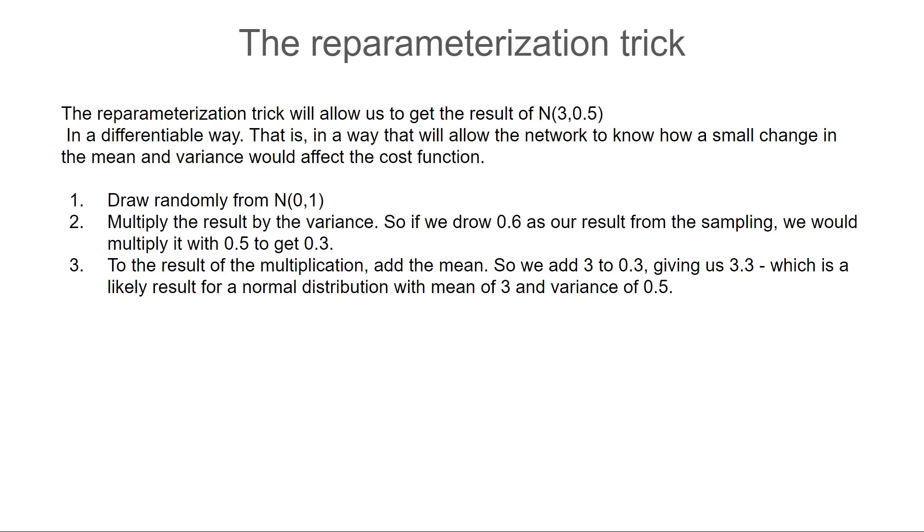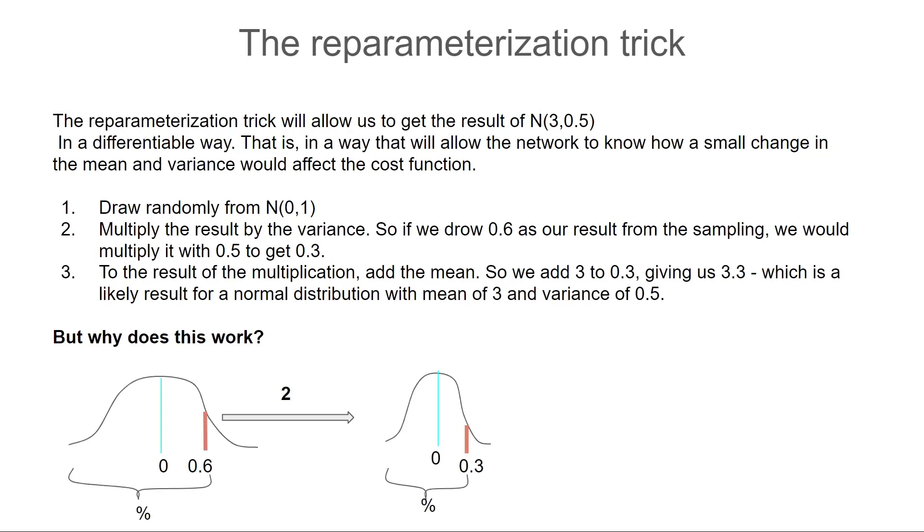Step two will convert our sampled value to the one we would have got from a distribution with zero mean but with our own variance, and step three is doing the same for the mean.